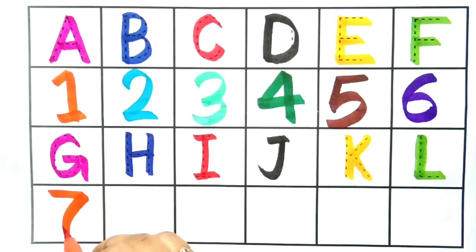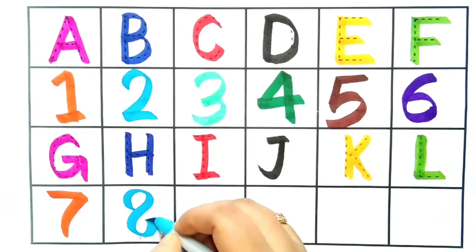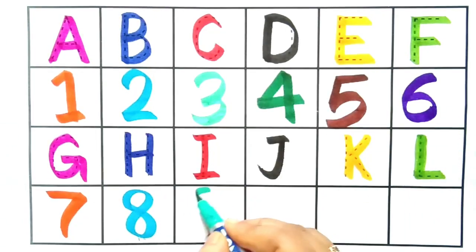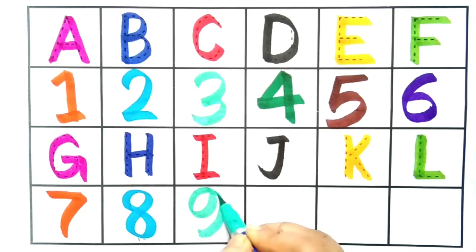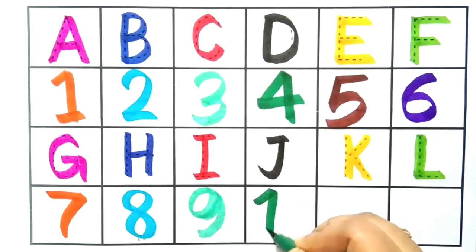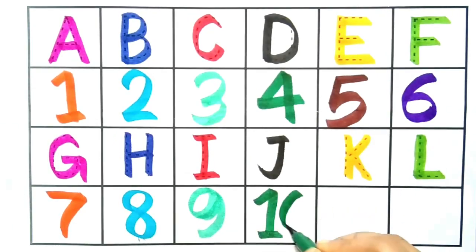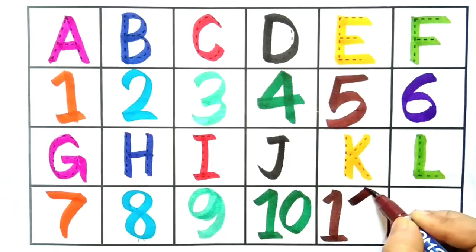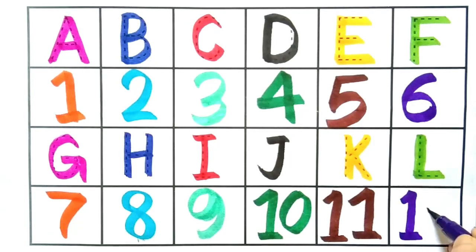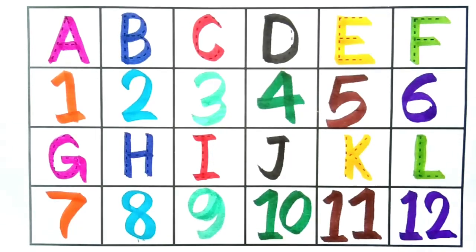Seven, it is number seven. Eight, it is number eight. Nine, it is number nine. Ten, it is number ten. Eleven, it is number eleven. Twelve, it is number twelve.